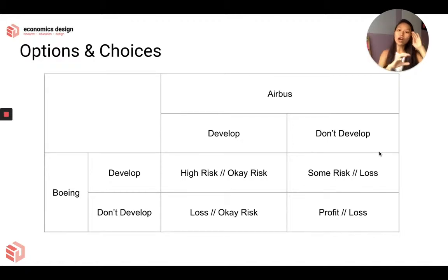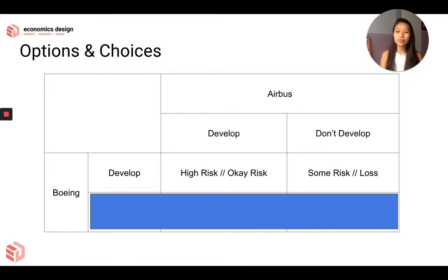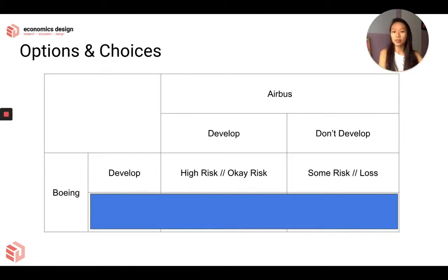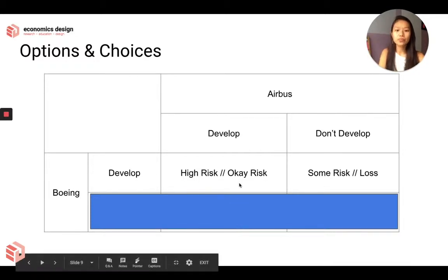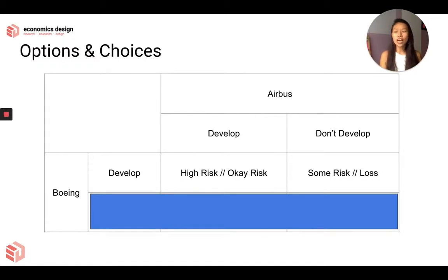I'm going to show you how to analyze this so we can look at what decision will be made. Let's look at what happens if Boeing develops first. If Boeing develops, Airbus has two choices — Airbus either develops or doesn't develop. So we only look at okay risk versus loss for Airbus. If Boeing chooses to develop no matter what, we just want to see what Airbus will do. Given two choices, okay risk versus a loss, the better action is okay risk. So if Boeing develops, Airbus will choose to develop as well.